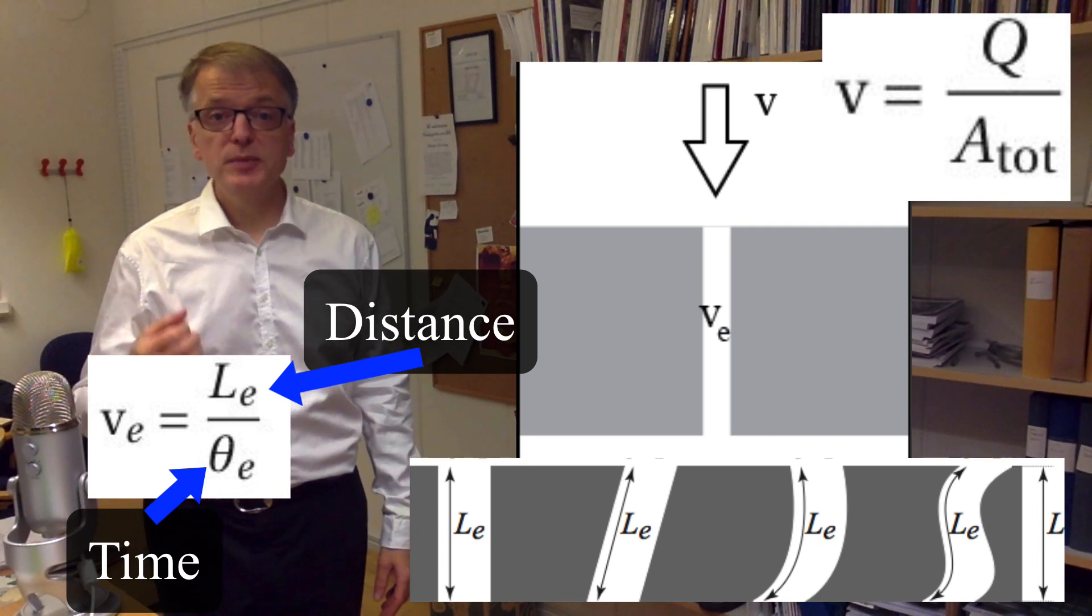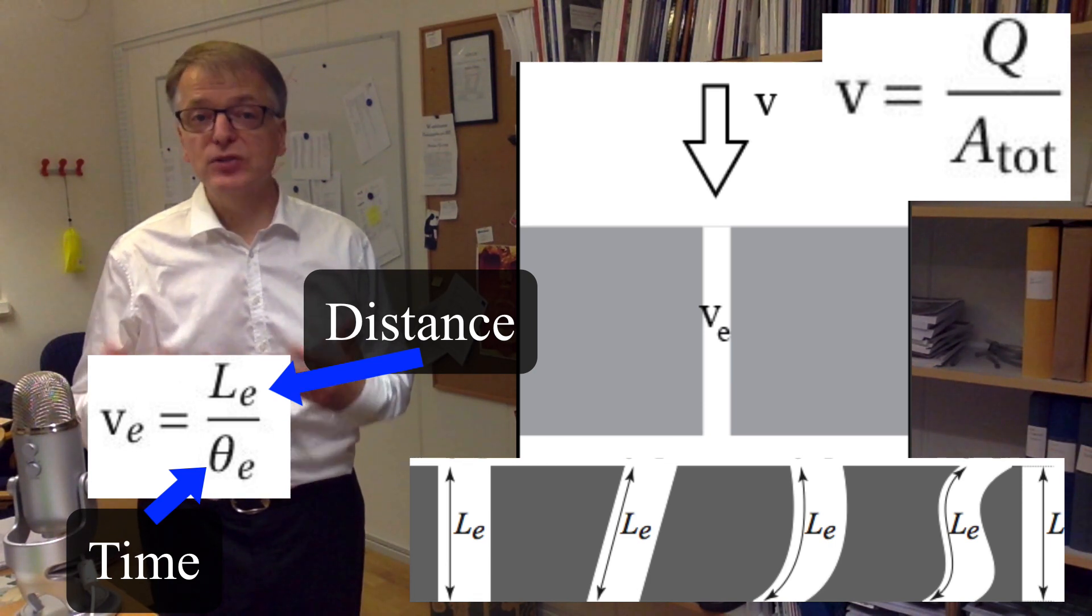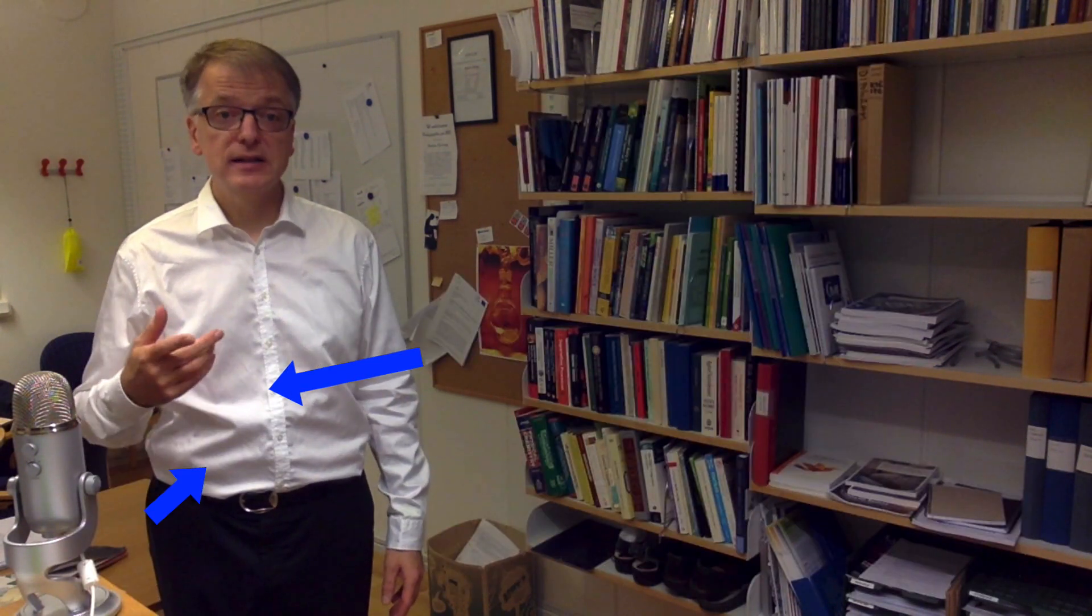To calculate the true velocity, you must take the actual distance travelled and divide that with the actual time it took to travel this distance.